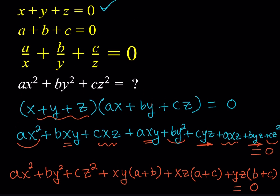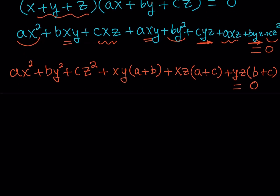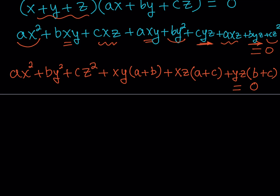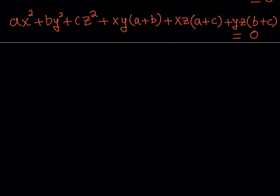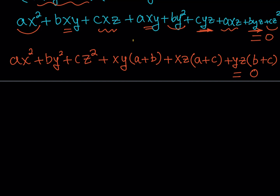We've only used the first expression so far. We still haven't used the second and third expressions, but we're going to use them. My next step is to do a substitution. Remember, our second expression says a plus b plus c is equal to zero. So since a plus b plus c equals zero, we can write a plus b as negative c, a plus c as negative b, and b plus c as negative a.